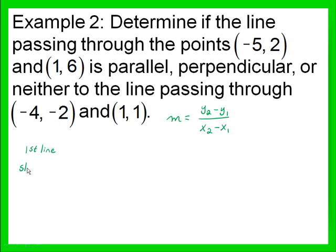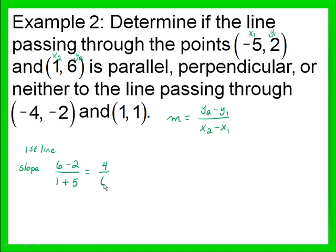For our first line, finding its slope: negative 5 is x sub 1, positive 2 is y sub 1, positive 1 is x sub 2, and 6 is y sub 2. Plugging into the slope formula, we have 6 minus 2 over 1 minus negative 5, which becomes plus positive 5. So 6 minus 2 is 4, and 1 plus 5 is 6. Since 2 divides into both 4 and 6, we reduce this fraction to 2 thirds.